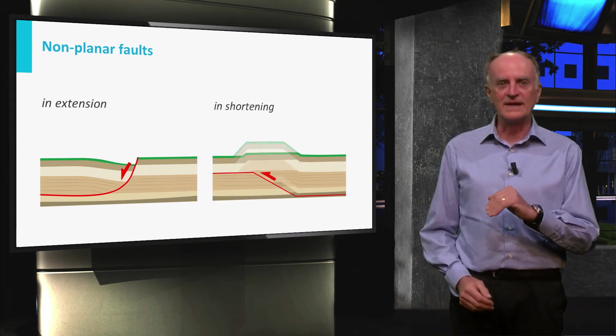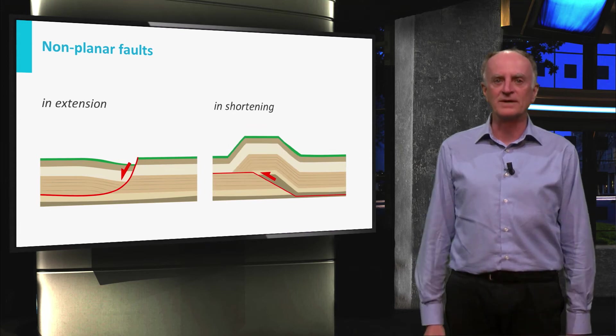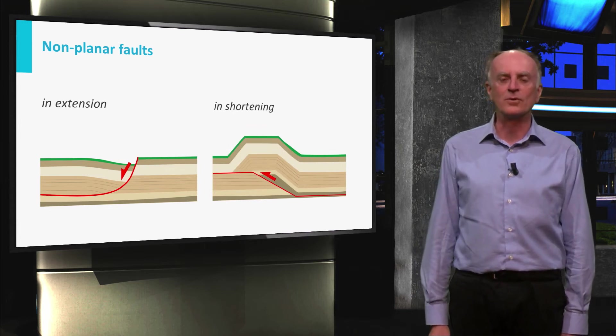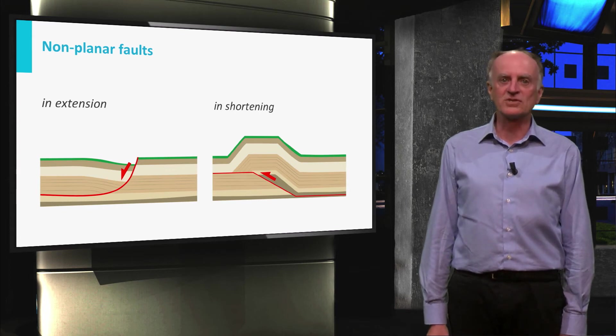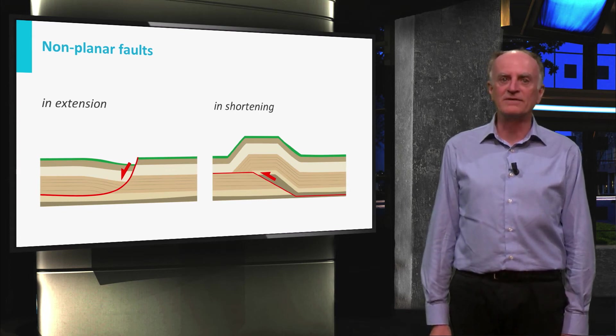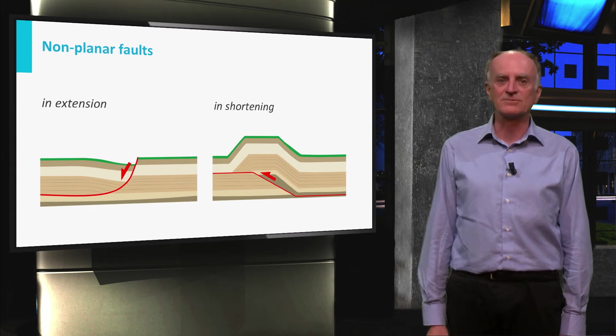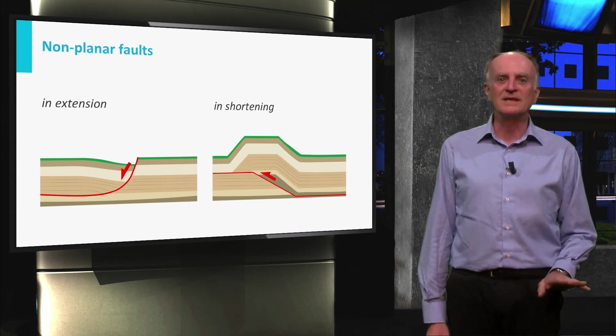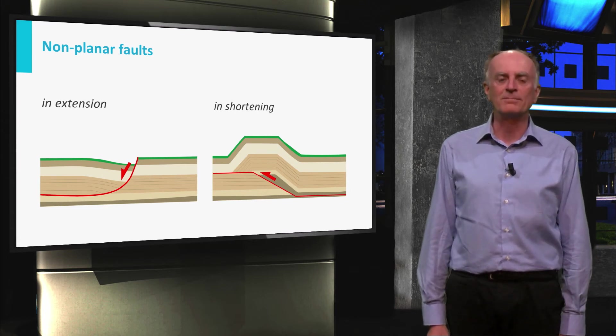In the reverse fault case, the upper block moves upward and forms also a fault called ramp-fault. Because of the curved shape of the faults, the upper block develops particular geometries and structures, which are not present in the much more regular and simple planar faults.